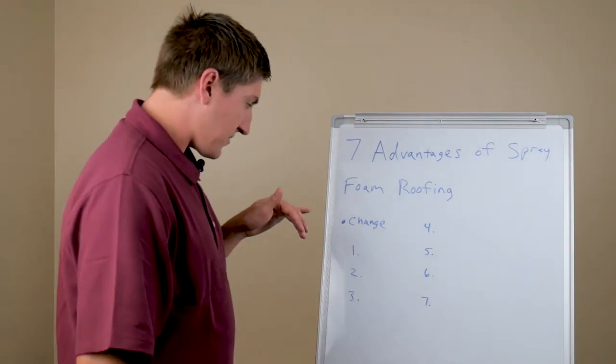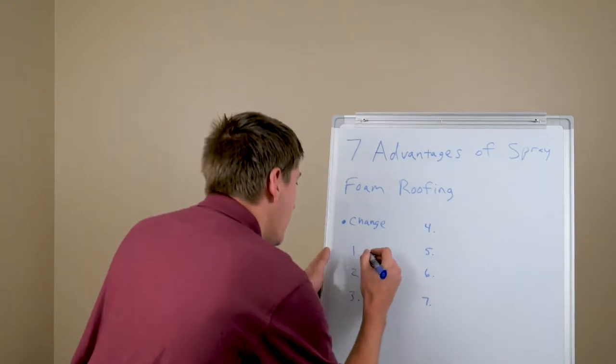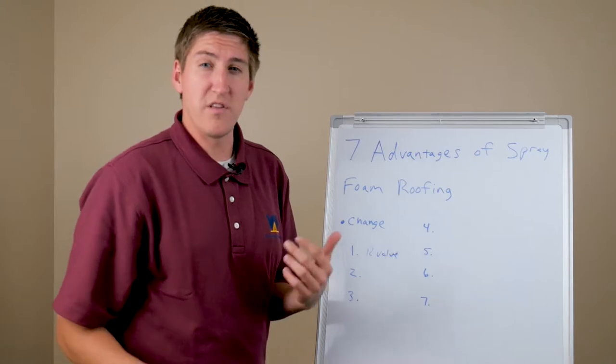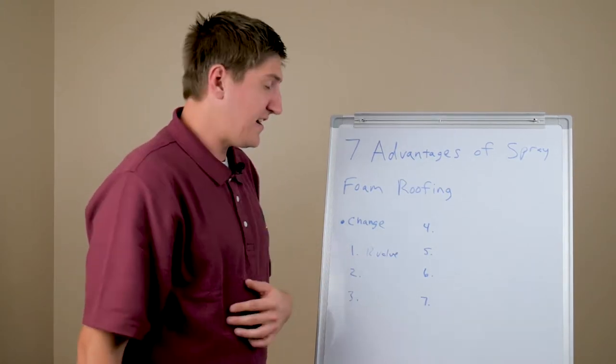Now the first benefit it has is that it's really good with R value. In fact, it's 6.6 per square inch, which is more than any roofing product out there in any system.